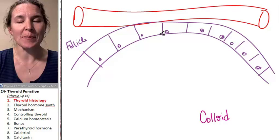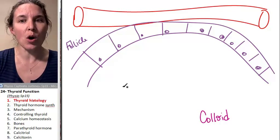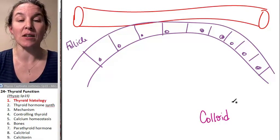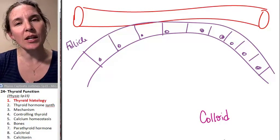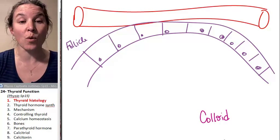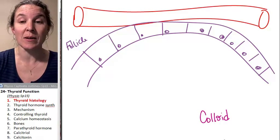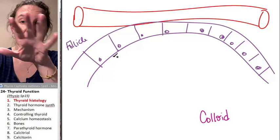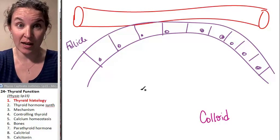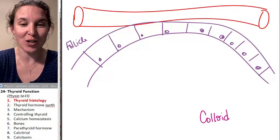We definitely have some action happening in the cells, but most of the big action happens in the colloid. So let's look at the mechanism for thyroid hormone synthesis, and keep this picture. I think I can keep this picture, and we can do it from here.